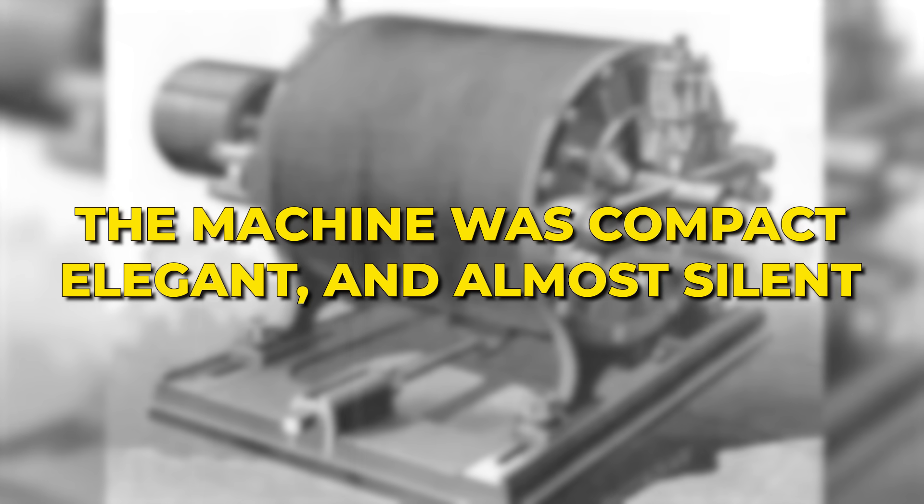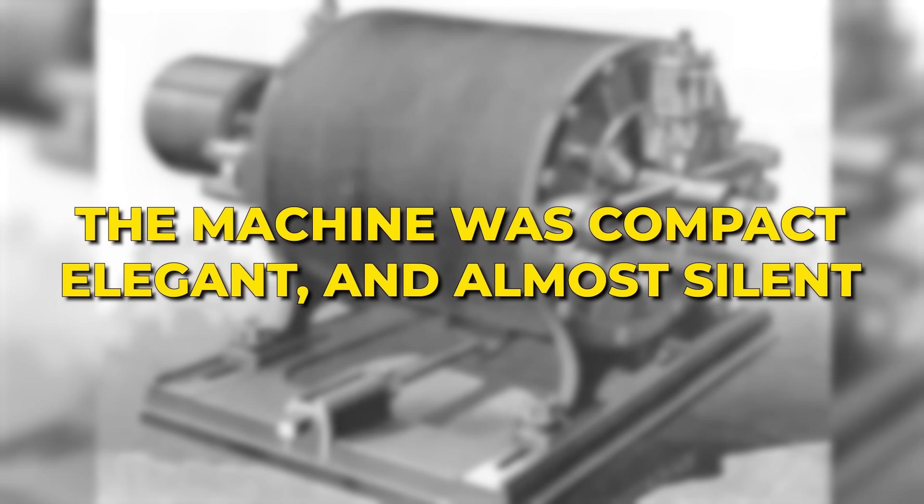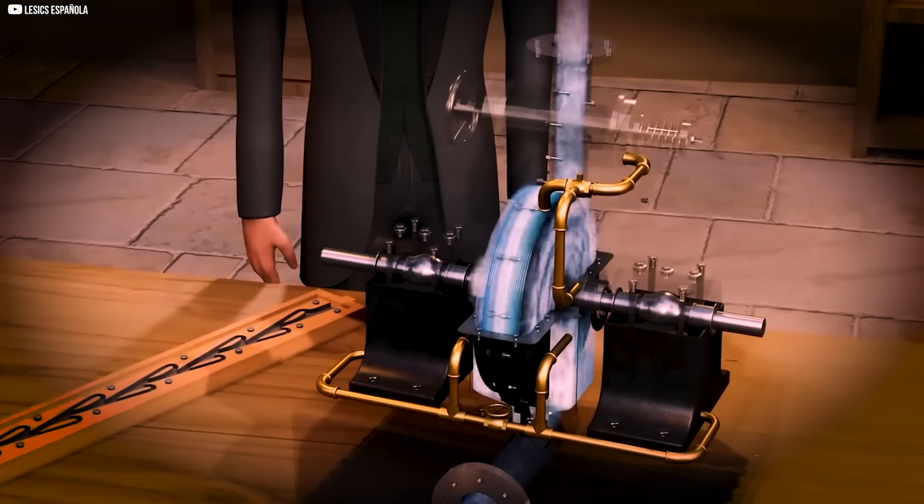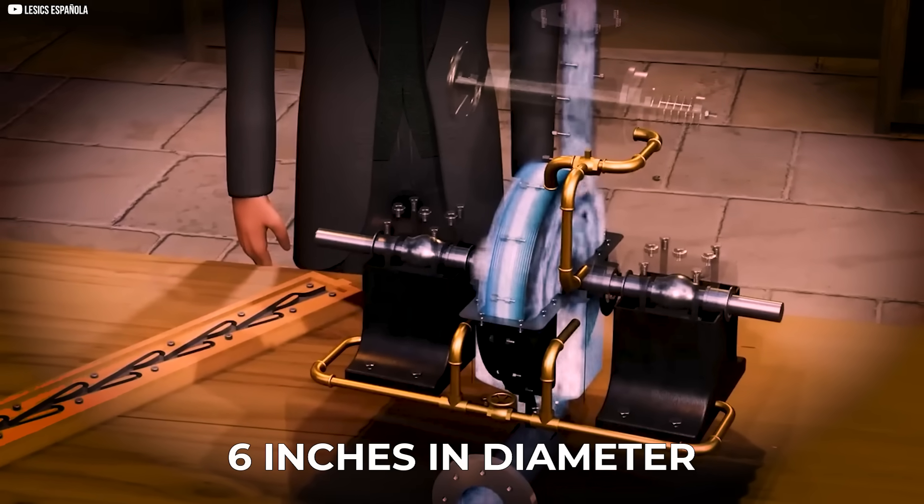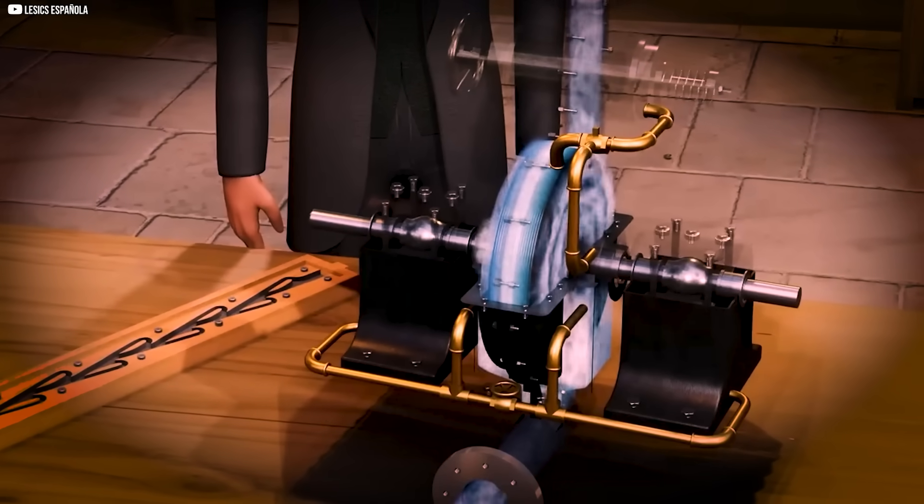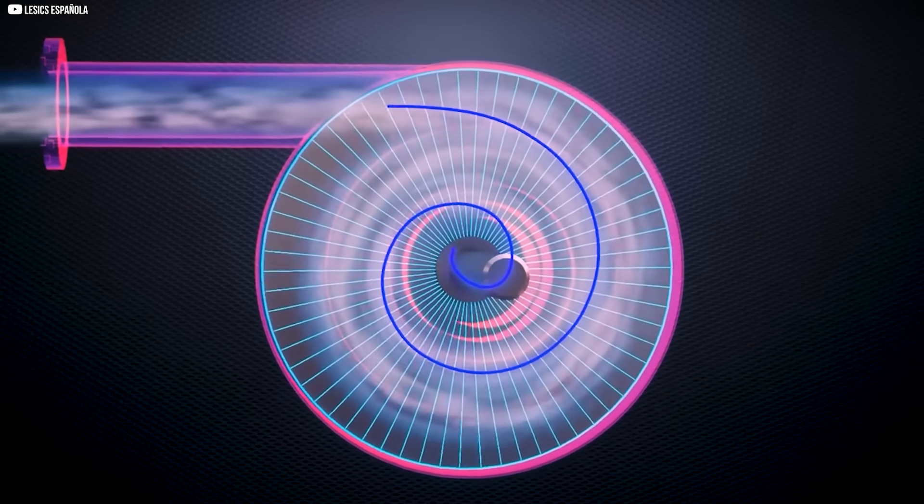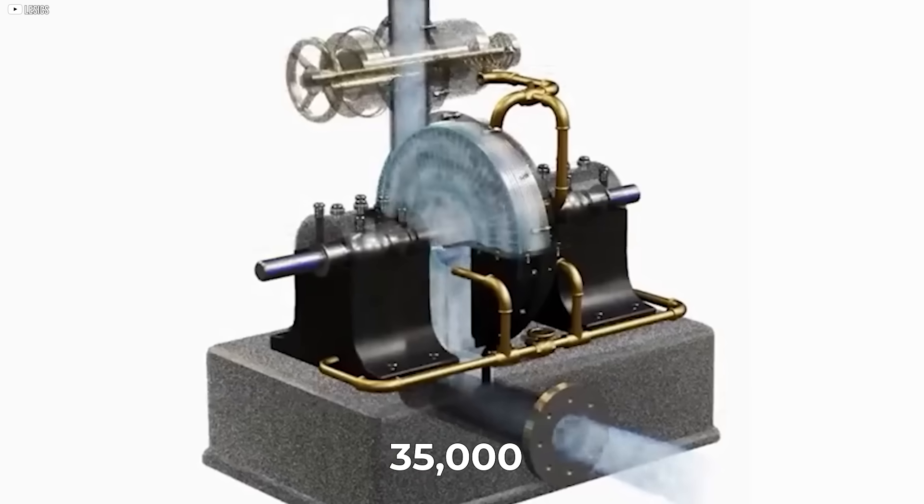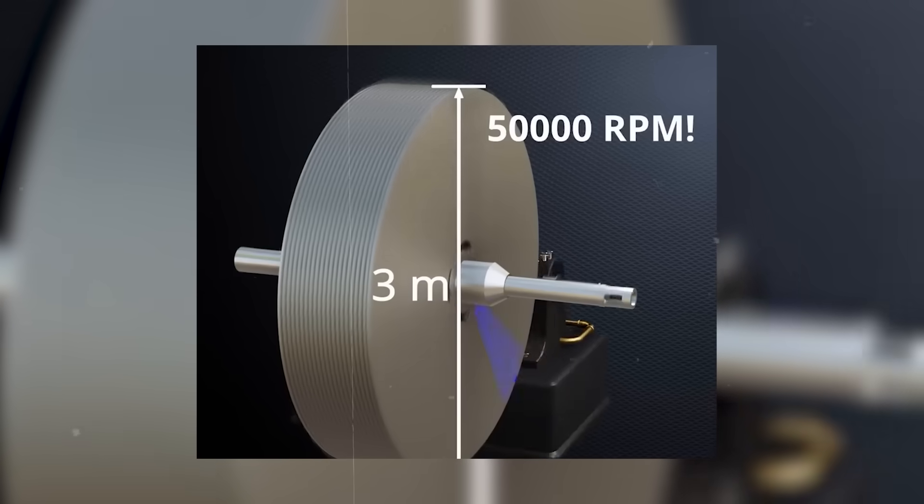Each one tuned to catch the swirling flow like a dancer catching rhythm. The machine was compact, elegant, and almost silent. It didn't roar. It whispered. Tesla's prototype, just six inches in diameter, was deceptively powerful. And it spun like nothing else, reaching an astonishing 35,000 revolutions per minute.